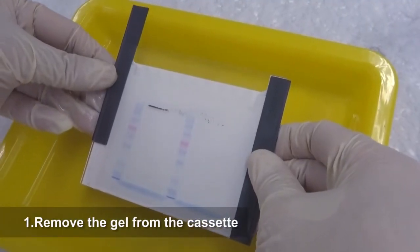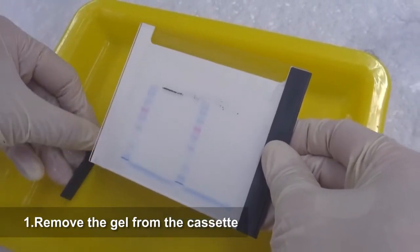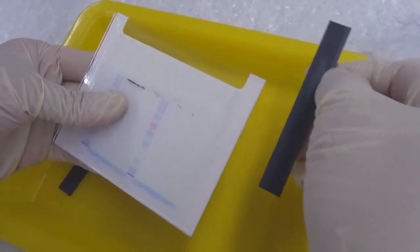1. Remove the gel from the cassette. First, carefully push out two spacers from the gel cassette sandwich to create some space at both sides of the gel.